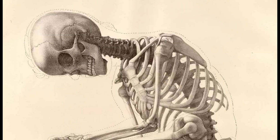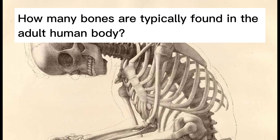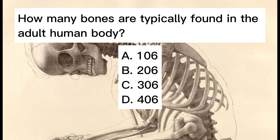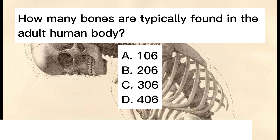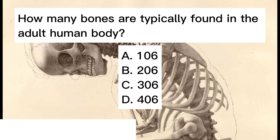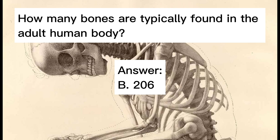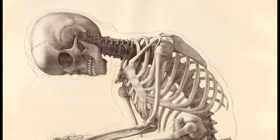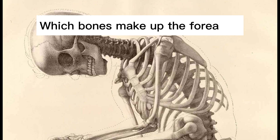How many bones are typically found in the adult human body? A. 106. B. 206. C. 306. D. 406. Answer: B. 206.